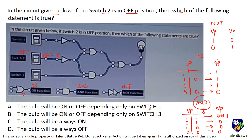The statement says the bulb will be on or off depending only on switch 1. Switch 2 is always off, so its value is 0. Through the NOT gate, this becomes 1. Since the OR gate has one input as 1, the output is always 1. Tracing through another OR gate with input 1, output is always 1 — the bulb remains always on. The answer is option C.